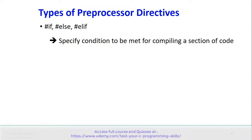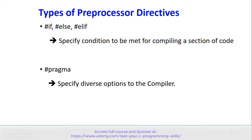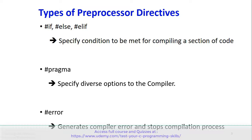Hash if, hash else, and hash elif are useful to specify conditions for compiling a section of code. Hash pragma is useful to specify diverse options to the compiler. Hash error is useful to generate a compiler error and stops the compilation process.